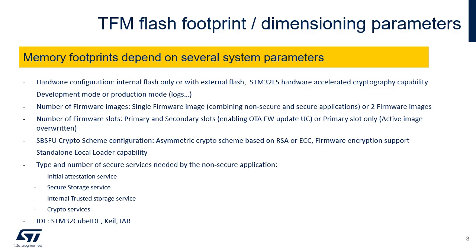This slide lists the parameters that affect the TFM flash footprint. The footprint depends on the hardware configuration of internal or external flash, especially the page size and also the possible encryption of flash regions. The number of firmware images and the number of firmware slots used to update the images impact the footprint. The size is also affected by the SBSFU crypto scheme configuration — asymmetric, based on RSA or ECC. If an image loader is needed, it also consumes part of the flash.